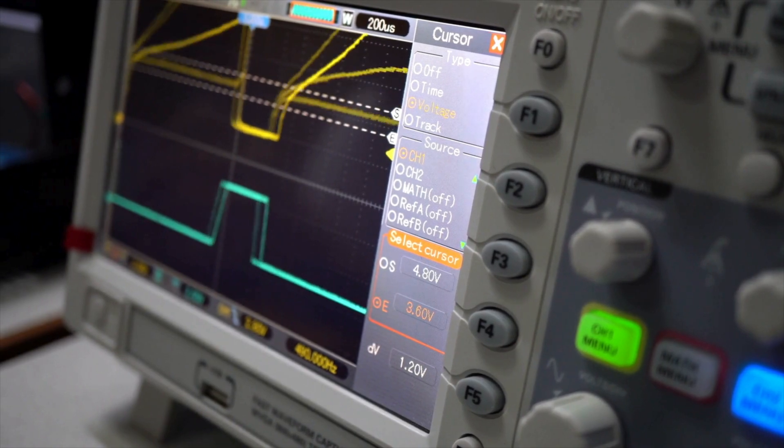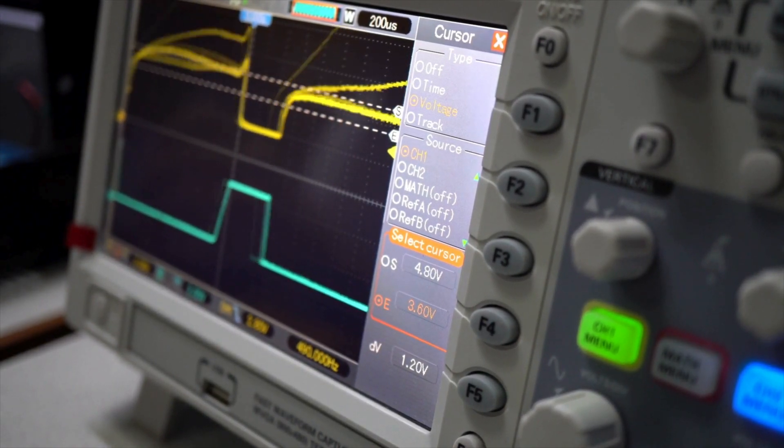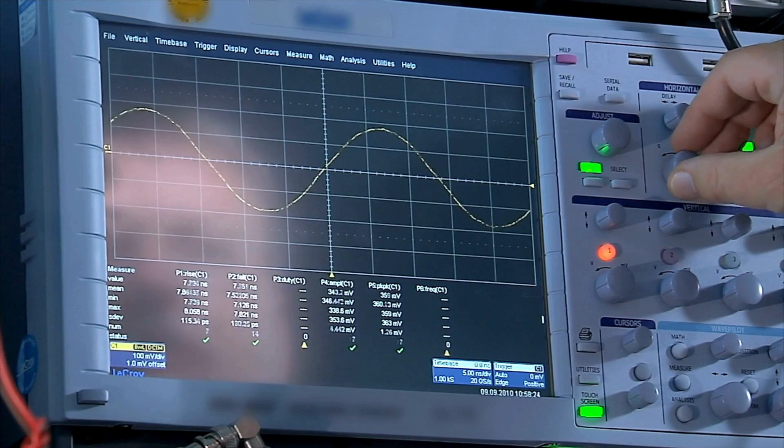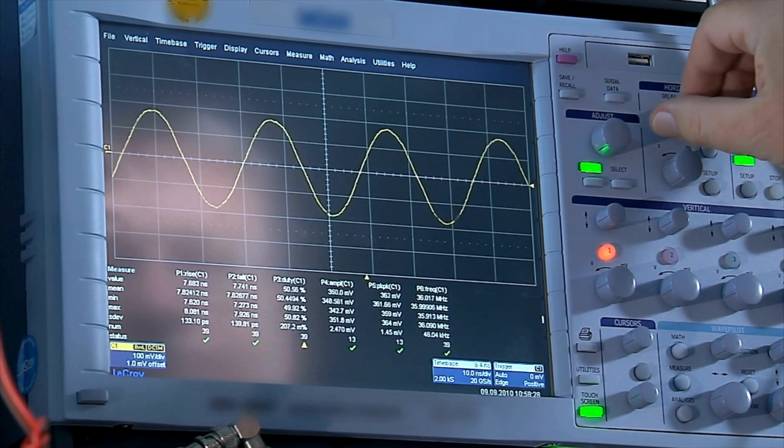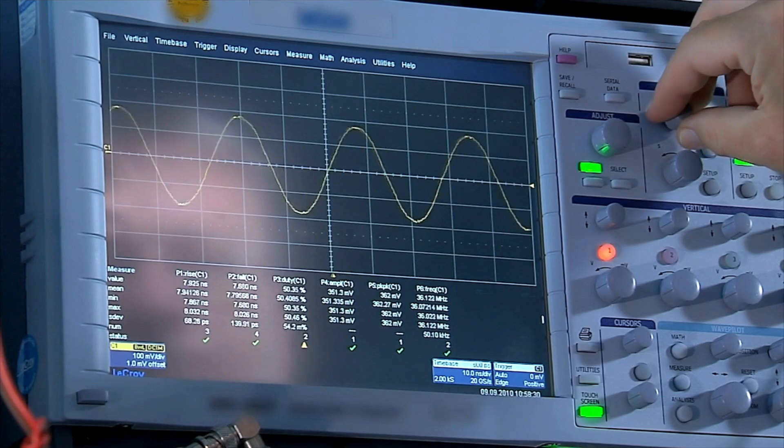Other features include channels, the number of separate channels that can be measured simultaneously, memory, how much data the oscilloscope can store, and user interface, including ease of use, screen size, controls, and software features.